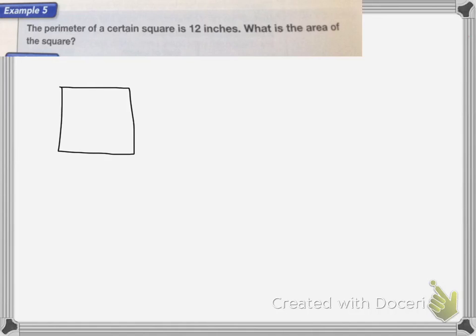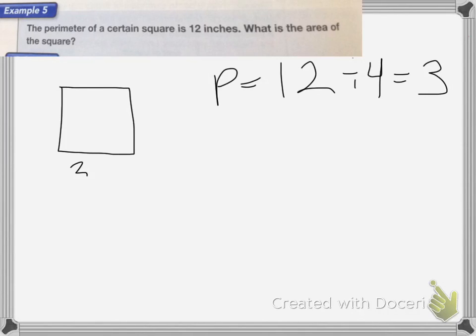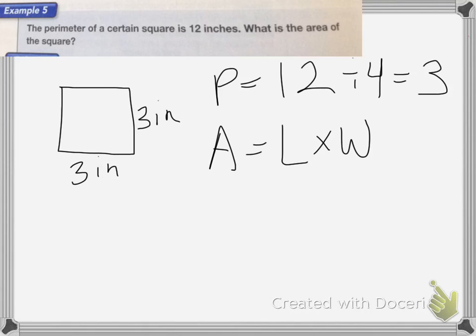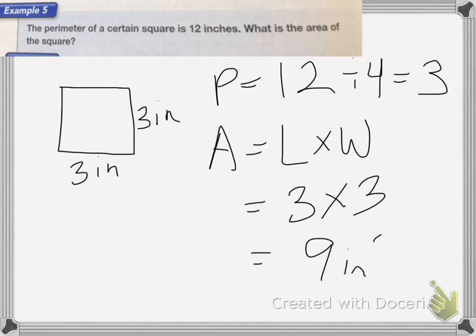The perimeter of a certain square is 12 inches — what is the area? First I need to figure out how long each side is. If the perimeter is 12, I do 12 divided by 4 to find the length of each side: 12 divided by 4 is 3. So each side is 3 inches. Area is length times width, so 3 times 3 equals 9 inches squared.